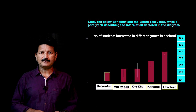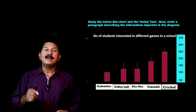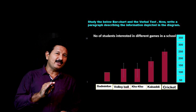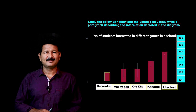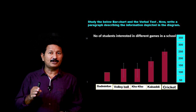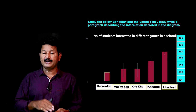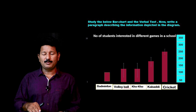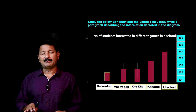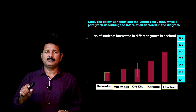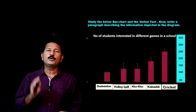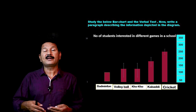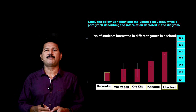Now let's look at this bar chart. It is all about the number of students interested in different games in schools. There are around 350 students. The games are: badminton, volleyball, kho-kho, kabaddi, and cricket. Look at the picture and think about your analytical ability — what comes to your mind after looking at it?